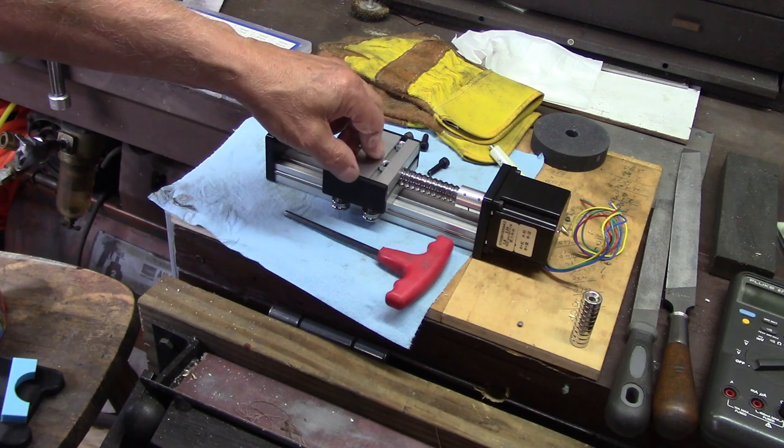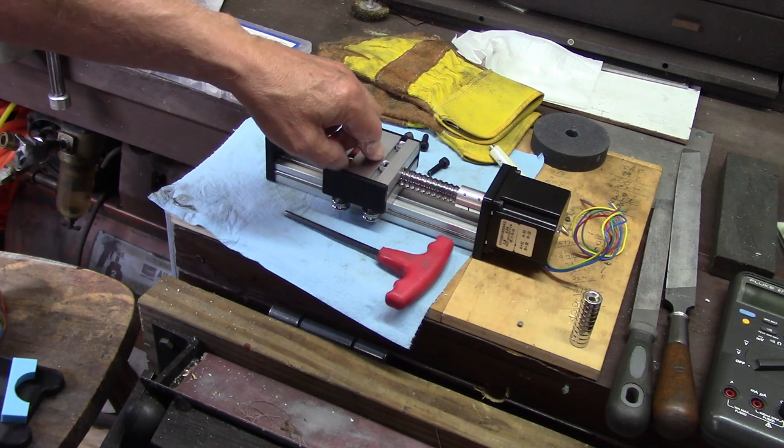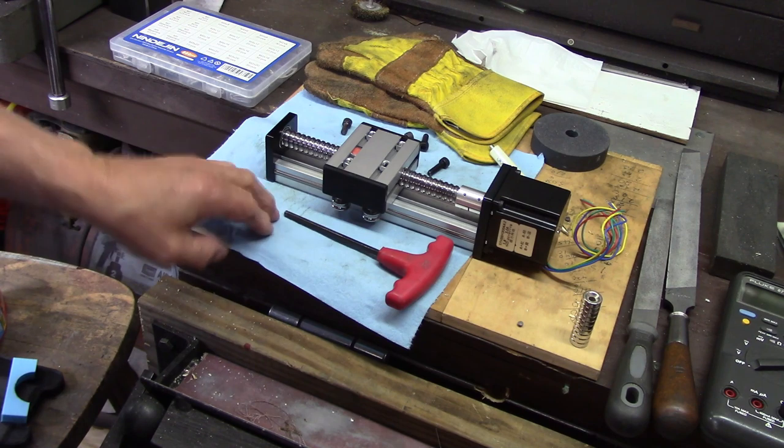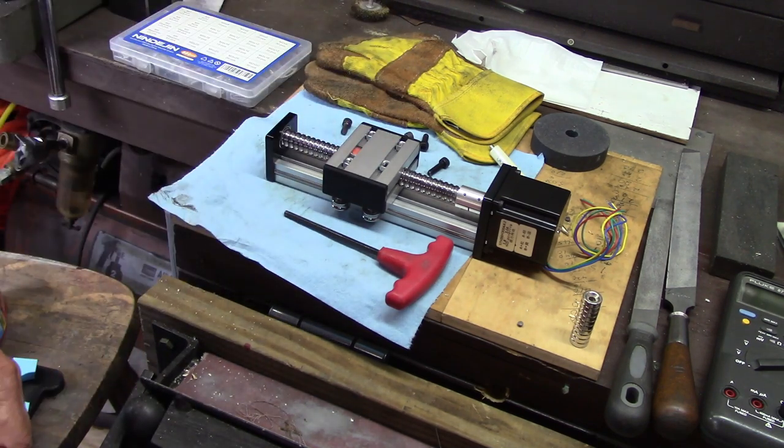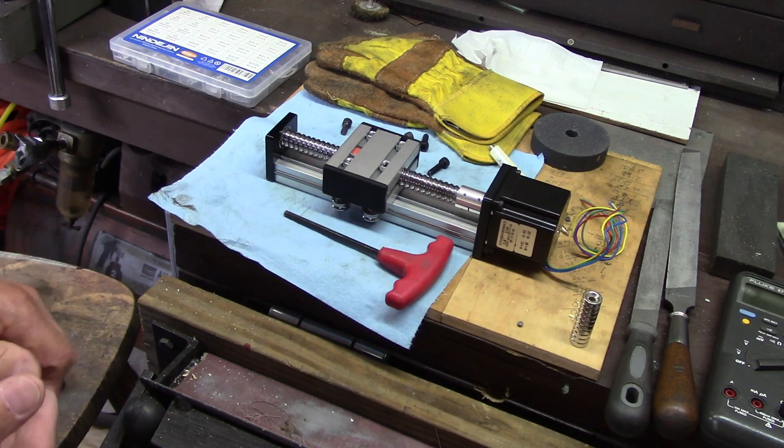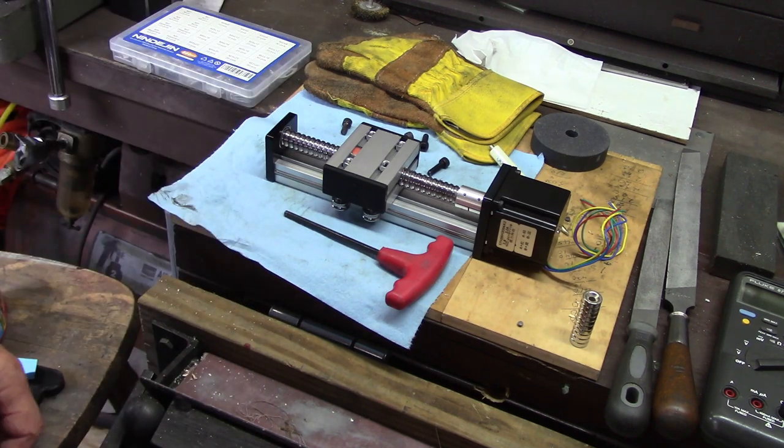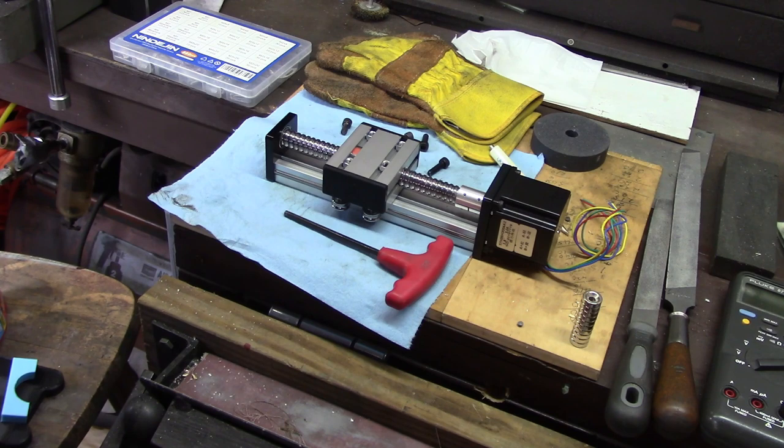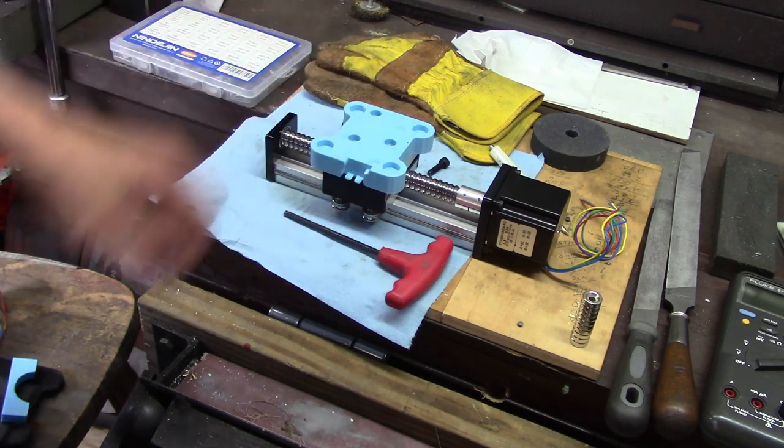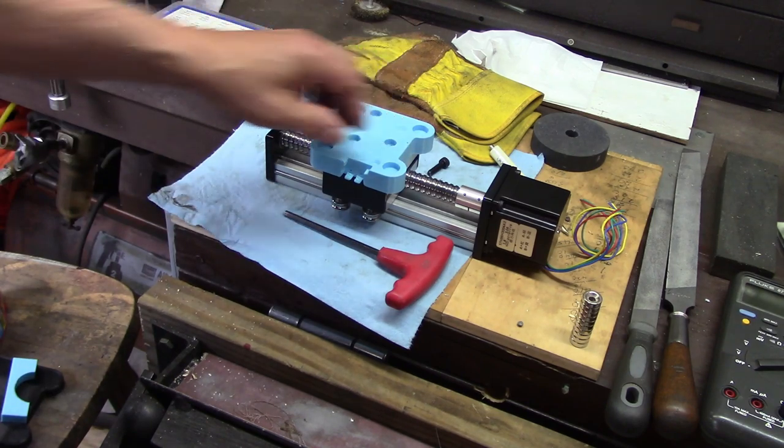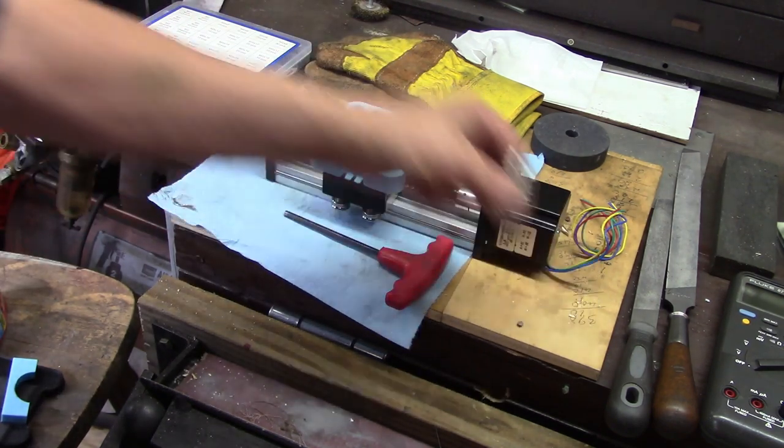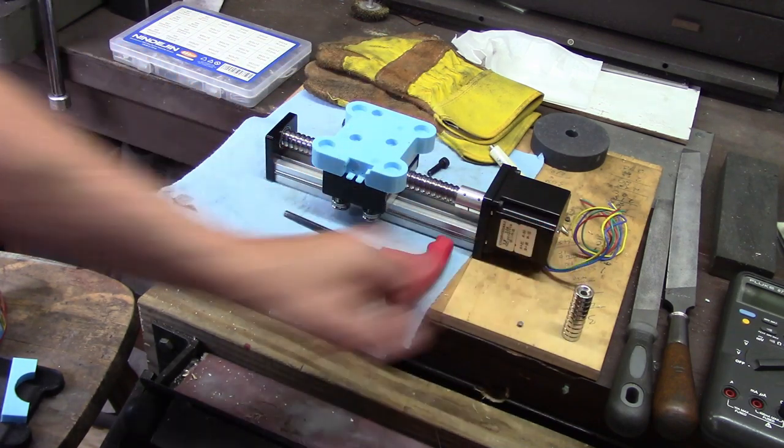Now here recently I changed my torch to have a spring loaded so it would push up about an inch worth if it ran into an obstruction. So that's another way of solving the problem. But I got curious. I want to know which way is the best way to go. So I bought one of these, about $65 on Amazon. And it's got a ball screw and everything, you know, it's really going to be super accurate.